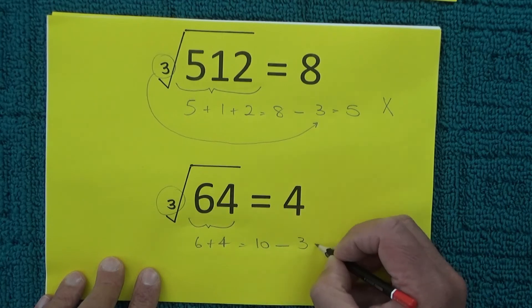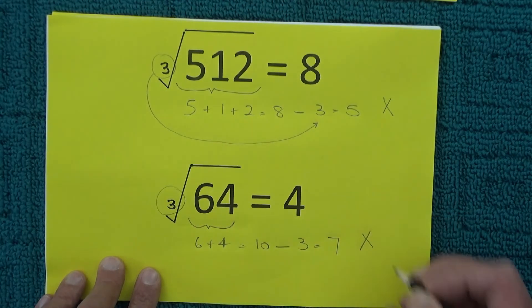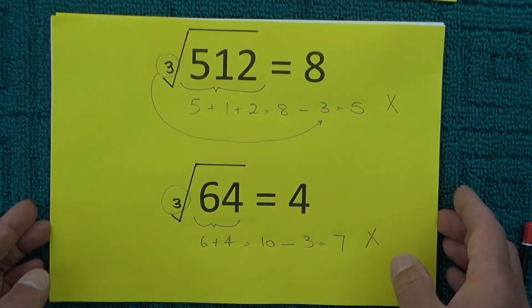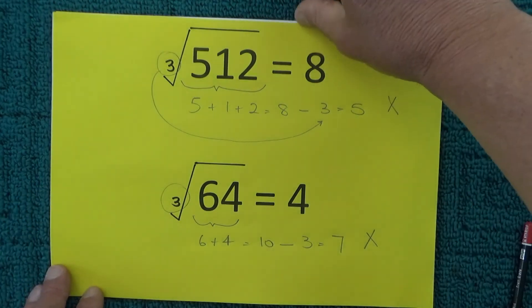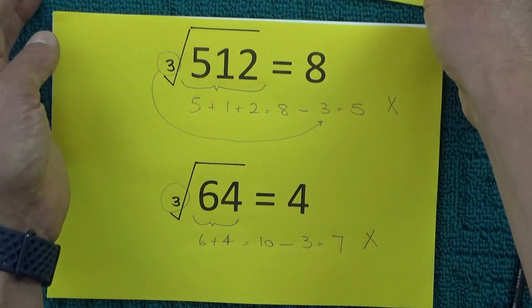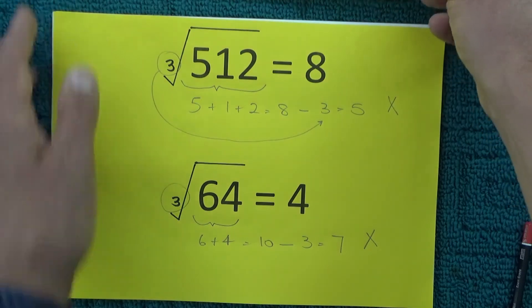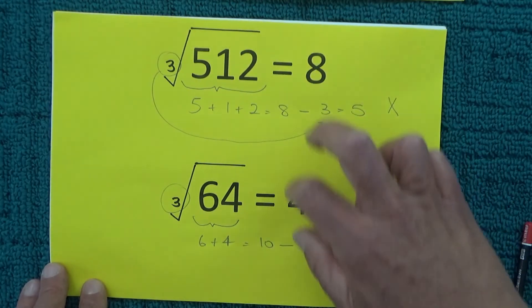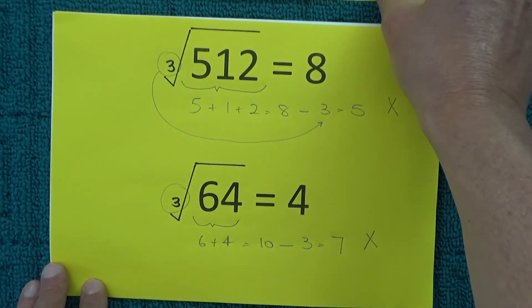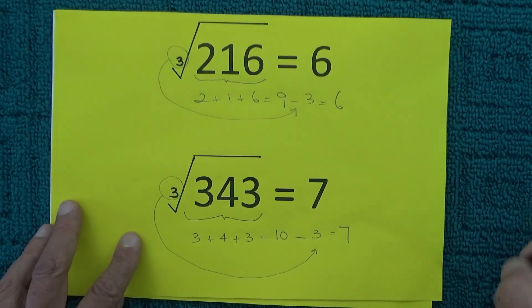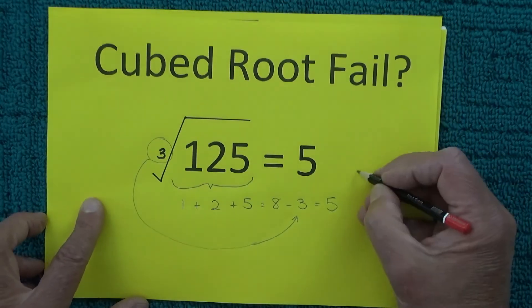So yes, it was sort of a shortcut method that works for a couple of cube roots but not for all. So it doesn't work for 4 and 8 but it does work for 6 and 7 and it also does work for 5.